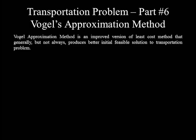In this part 6 of transportation problem, we are going to discuss Vogel's approximation method for setting an initial feasible solution. Vogel's approximation method is an improved version of the least cost cell method that generally, but not always, produces a better initial feasible solution to the transportation problem.